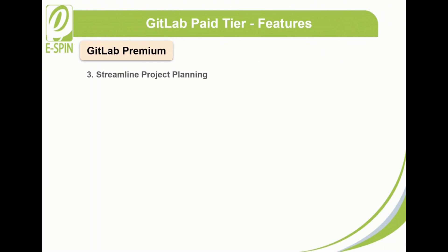3. Streamline project planning. Streamline project planning involves managing multiple agile projects or programs with intuitive, user-friendly dashboards and reports to track issues and milestones across multiple projects, covering distributing different tasks to different team members and letting them work together to deliver results.